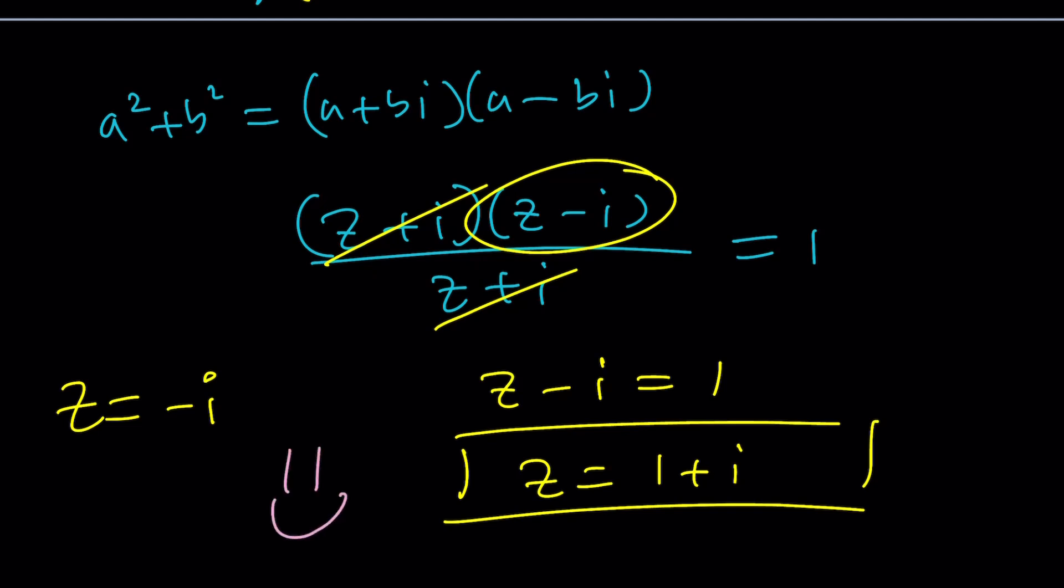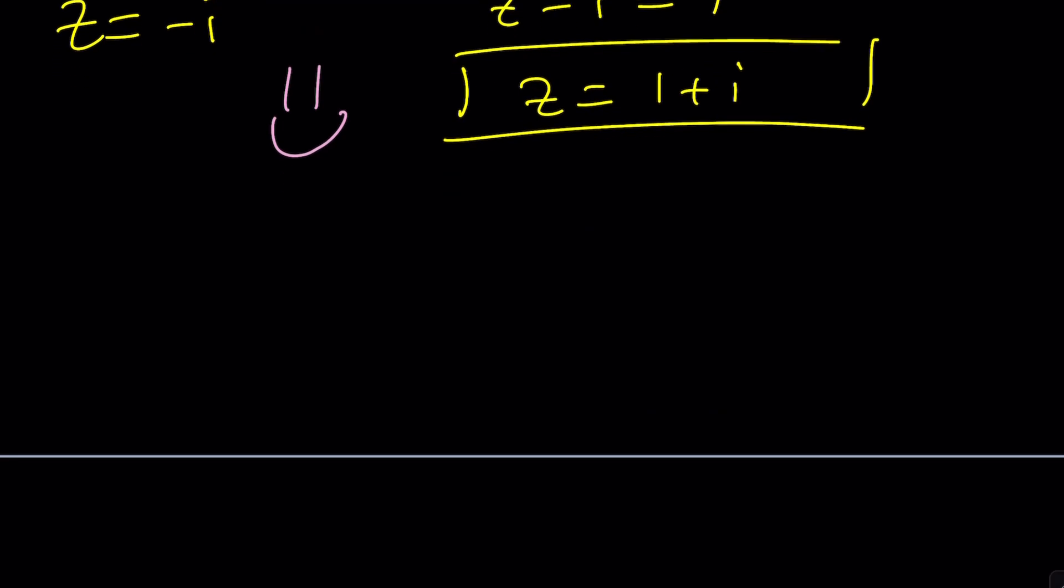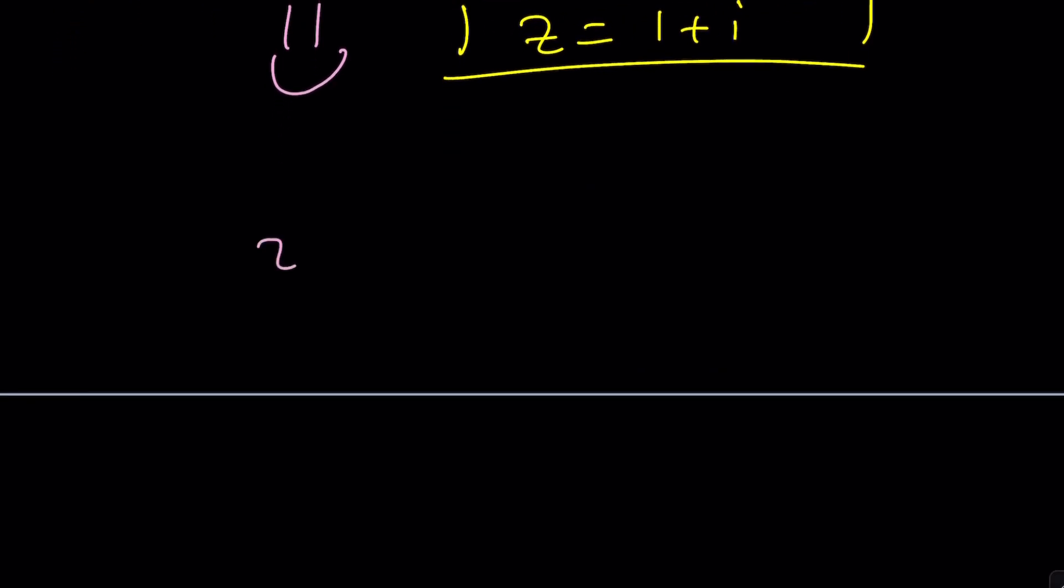Because if z is equal to negative i, think about it. Now, let's go back to the original, back to basics. If z is equal to negative i, then plug it in. Negative i cubed is negative i cubed, which is i. And then z is negative i. This is going to be 0.